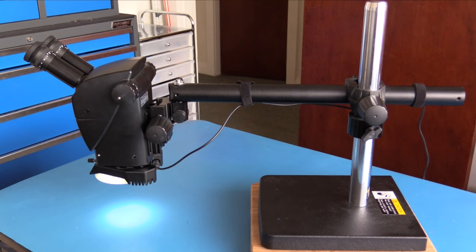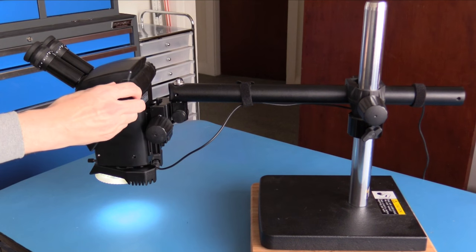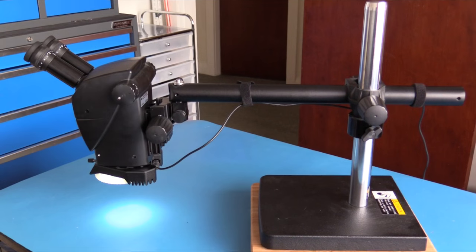This stereo microscope's optics are par focal. Par focal refers to the ability to focus this microscope and then adjust the zoom level. The microscope will remain in focus across the zoom range. This allows you to adjust the level of magnification without needing to refocus the microscope.